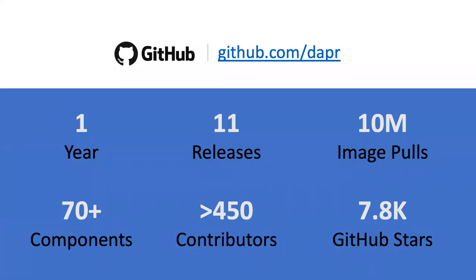It's been less than a year since we announced DAPR in October 2019, and we've had 11 major releases. As of this morning, we've landed the 11th release, B0.11. There's a decent number of image pulls signaling real-life usage — people are actually using this. We have 70-plus different components covering pretty much the entire CNCF data and messaging spectrum, a growing number of contributors, and of course, the all-important GitHub stars.